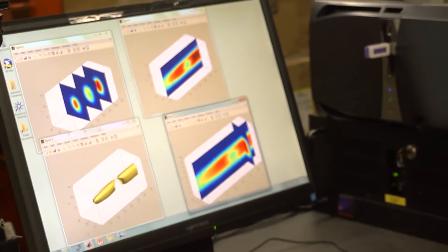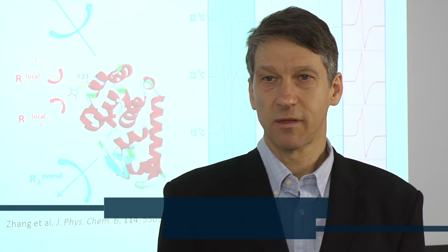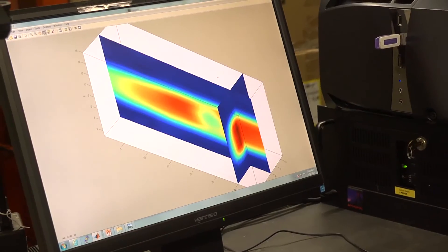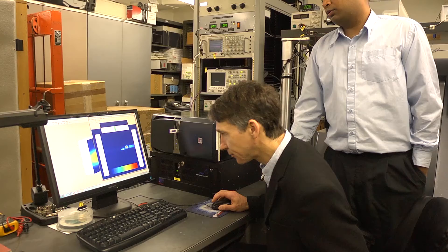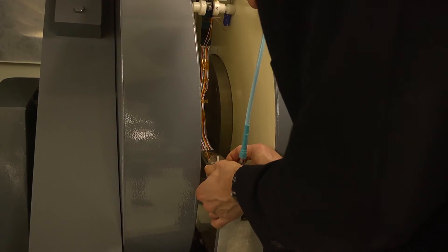An important capability of ACERT is performing ESR spectroscopy at a wide range of frequencies. This is currently from 9 to 240 gigahertz or a factor of almost 30.